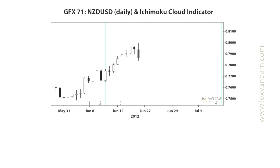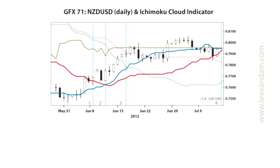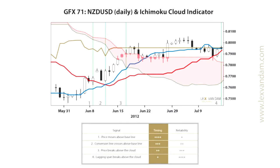If we plot all five components together — the base and conversion lines, the two leading spans that form the cloud, and the lagging span — we can see that triggers often occur in the following order. First, the price moves above the baseline. This signal gets you into a trade very early and at a good price, but the reliability is quite low. After this comes the crossover of the conversion and the baselines — the timing is slightly worse but the performance is a bit better. After that, the price breaks through the cloud, giving up some timing in return for more reliability. Finally, the lagging span crosses above the cloud, giving the ultimate confirmation of a trend change. The timing is slower as a lot of the move has already happened, but the quality of this trigger is often quite high.